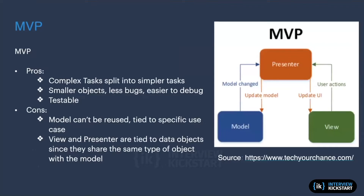Now let's look at another pattern: MVP, which stands for Model View Presenter. The key difference is that the presenter plays a big role. There is no direct connection between model and view. Whenever the model gets changed, it notifies the presenter. If the presenter wants the model to be updated, it directly tells the model. Similarly, user actions go to the presenter, and the presenter updates the UI directly.